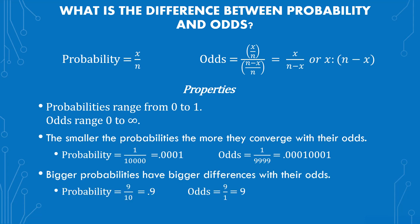The last is that bigger probabilities have bigger differences with their odds. So probability of 9 over 10 or 0.9, the odds of that is 9 over 1 or 9. If it was 99 over 100, it would be 0.99, and then the odds of that would actually be 99 over 1, which would give you 99. This comes back to the ranges. So as you approach 0 with the probability, the odds will be approaching 0, but as you're approaching 1 with the probabilities, the odds will be approaching infinity.